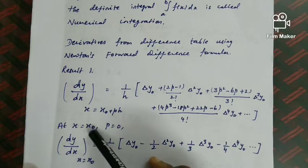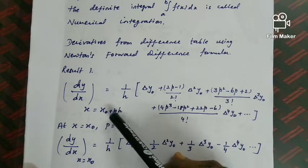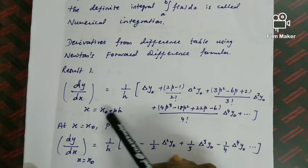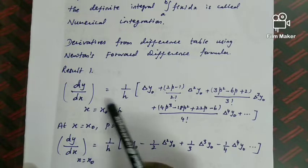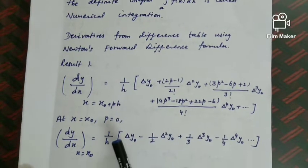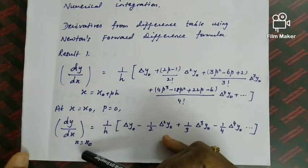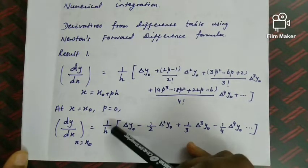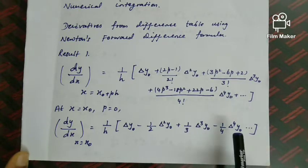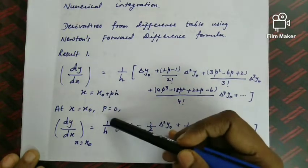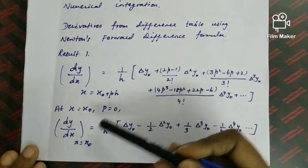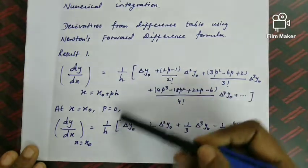At the point x = x₀, if p = 0, the dy/dx formula simplifies. Since x = x₀ + ph, we get p = (x − x₀)/h. Substituting p = 0, dy/dx at x = x₀ equals (1/h)[Δy₀ − (1/2)Δ²y₀ + (1/3)Δ³y₀ − (1/4)Δ⁴y₀ + …]. This is the formula for dy/dx at x = x₀ when p = 0 using the forward difference formula.